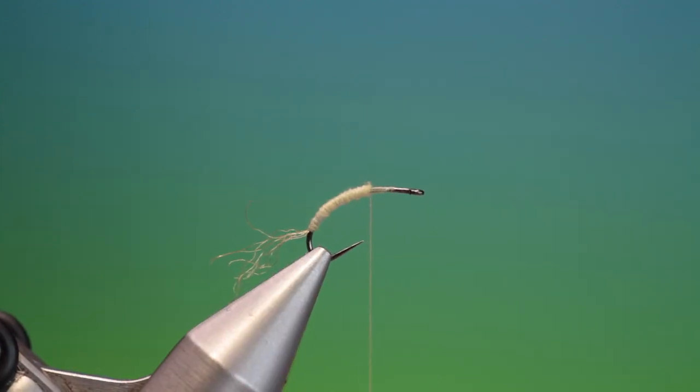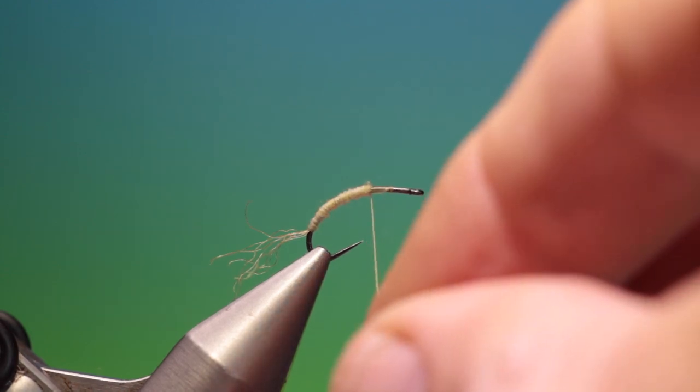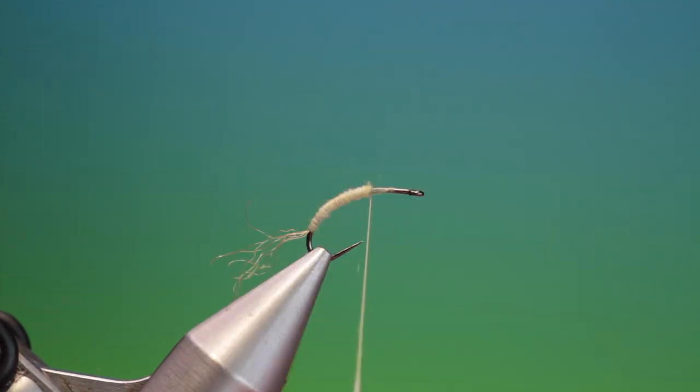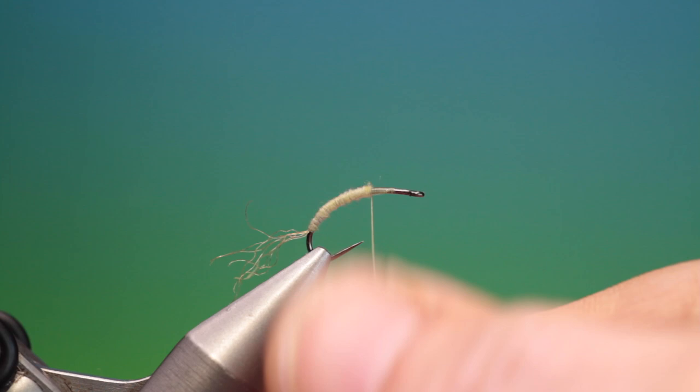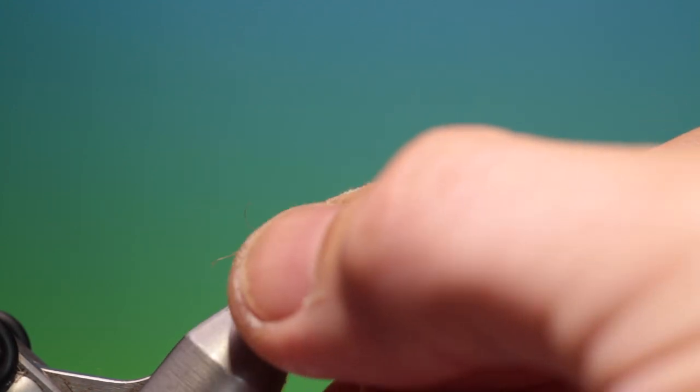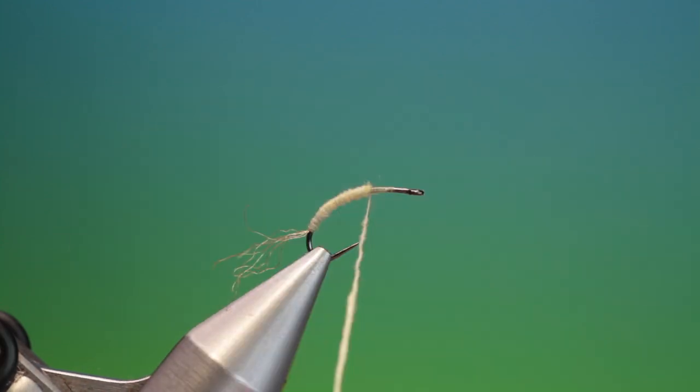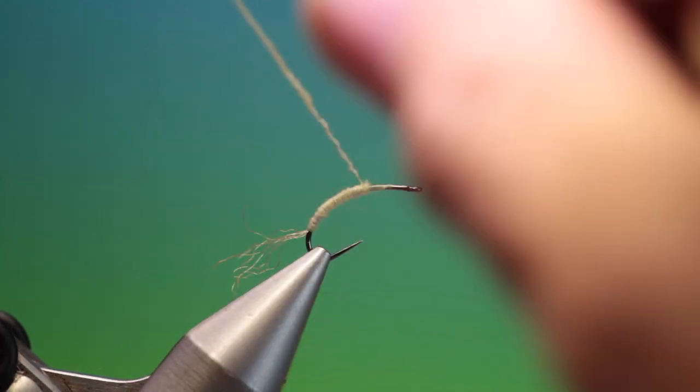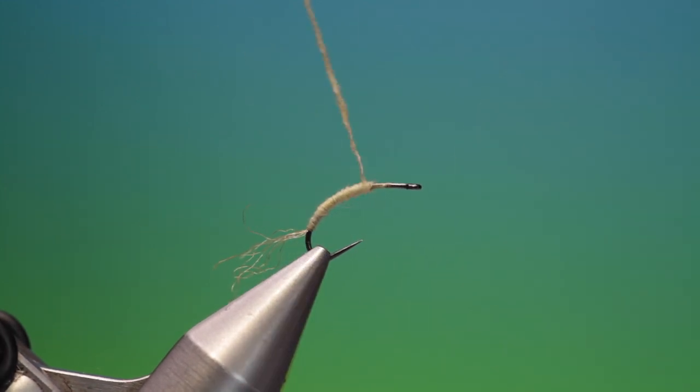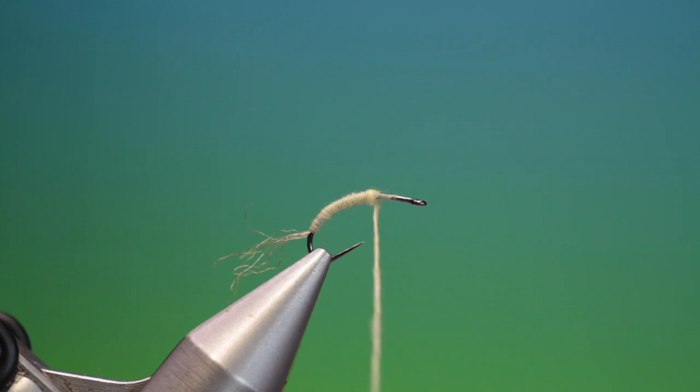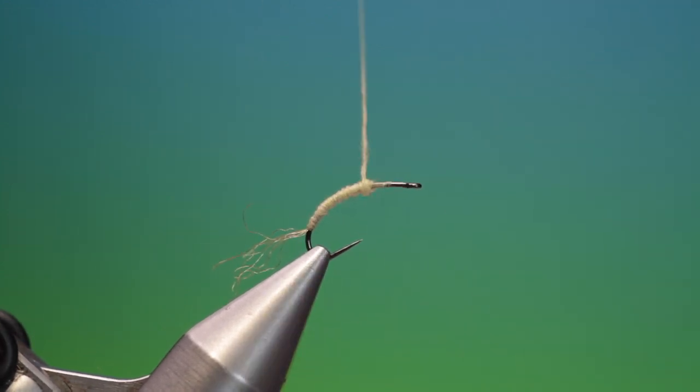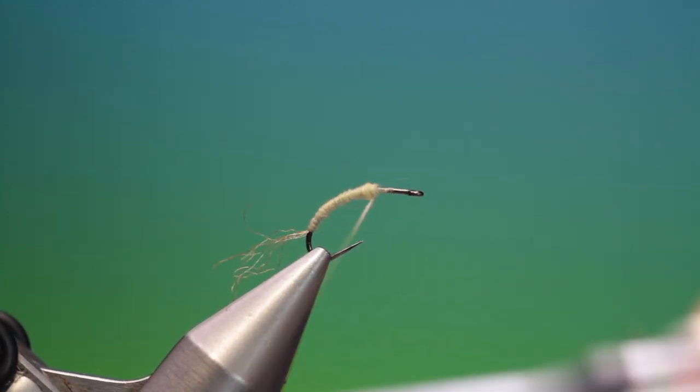Then when we get to there, we need a little bit more dubbing and we want to make a support, a very tight spun dubbing for the wing, little ball if you will. So we just go in here, that'll do just fine.